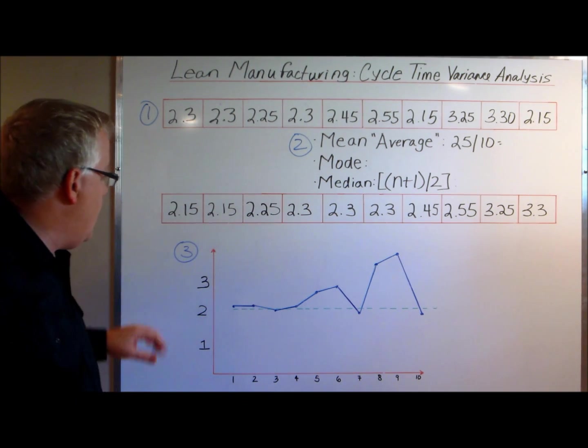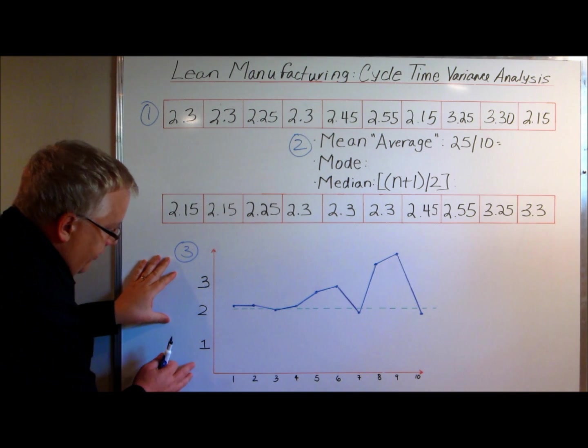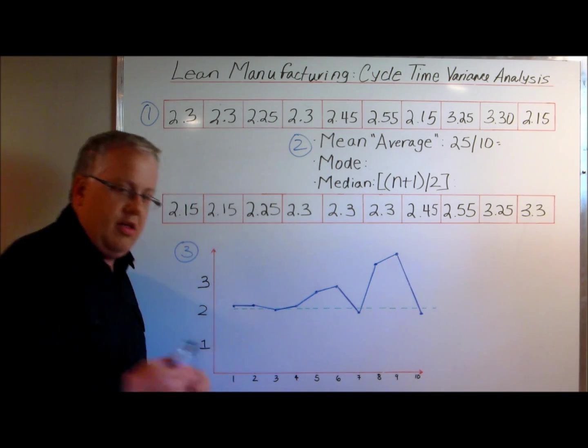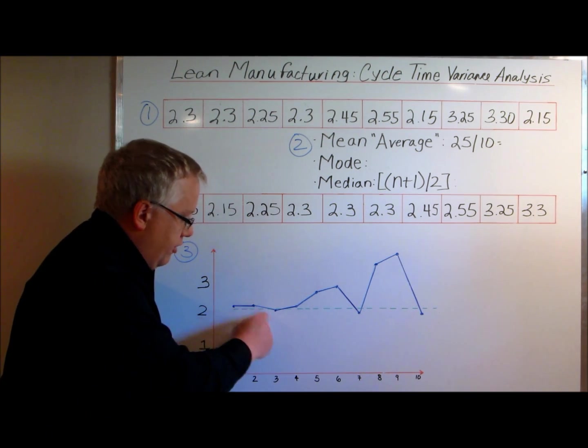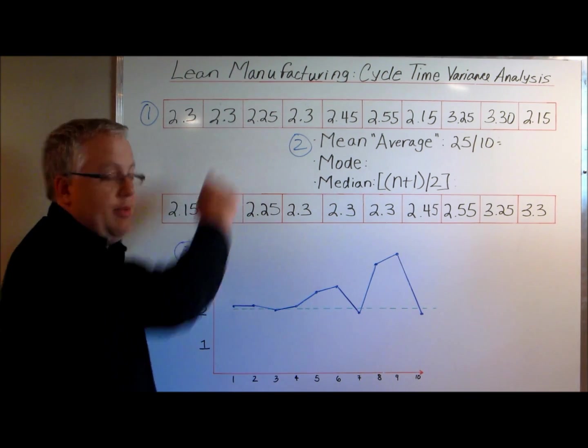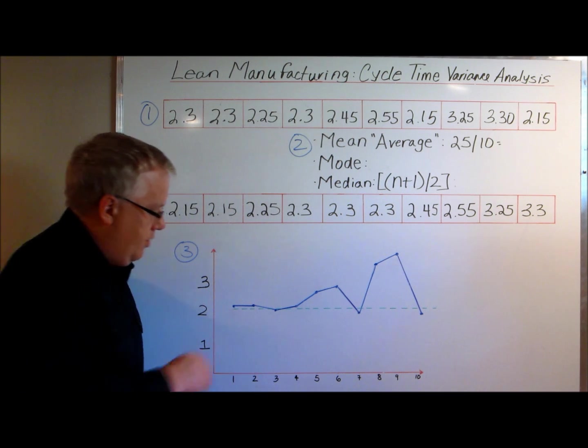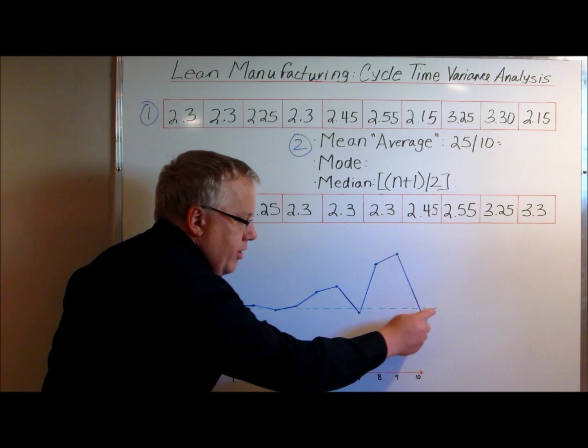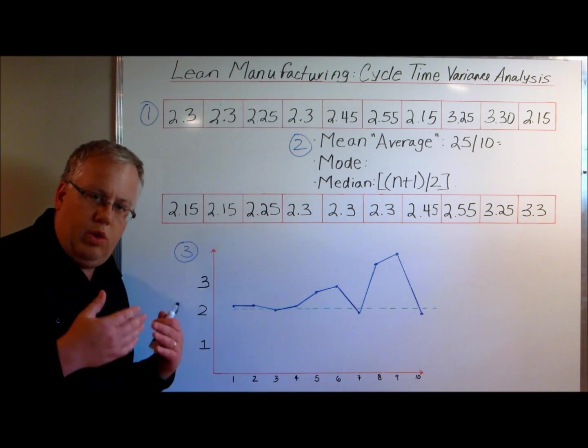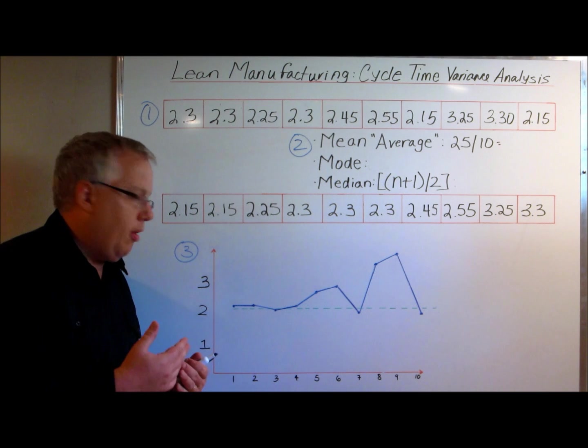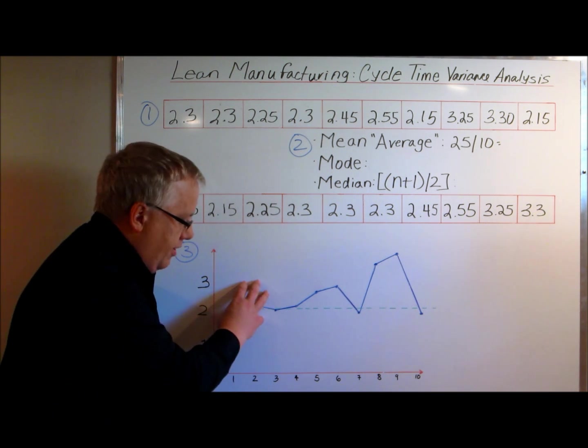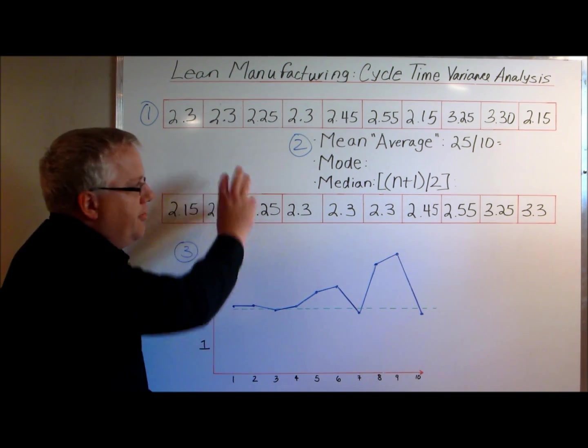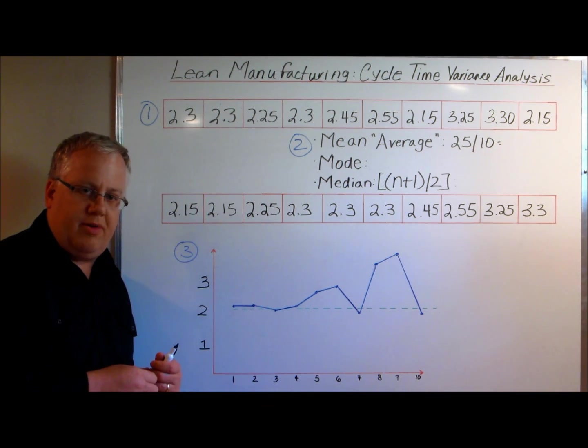The third thing I want to cover is this graph I have up here. This graph has a simple representation of cycle times from these 10 operations that are in this table up here. I've graphed out these cycle times, and this dotted green line is what we would term or assume to be our benchmark cycle time. This is a great tool, and a link has probably popped up above my head.